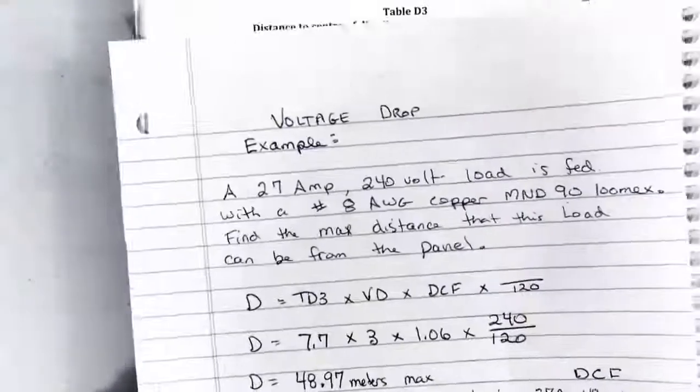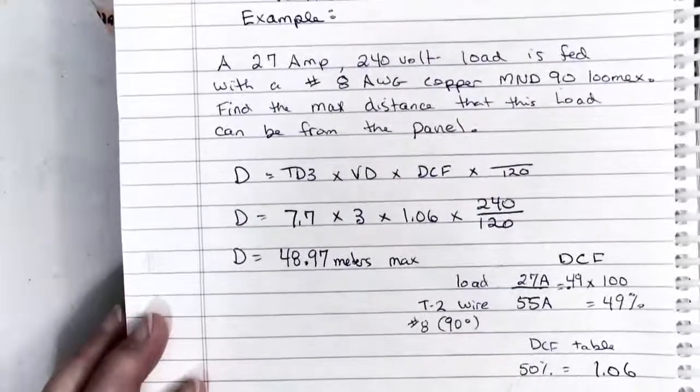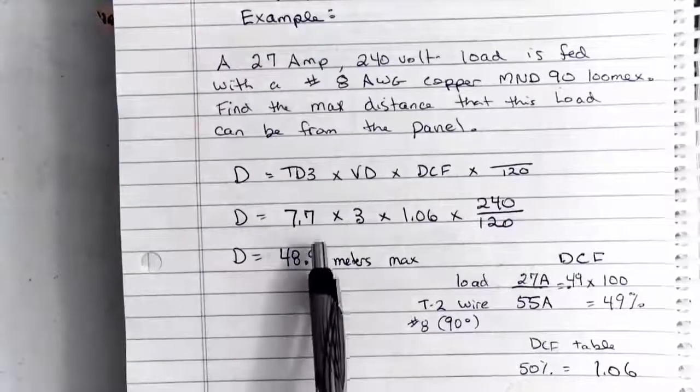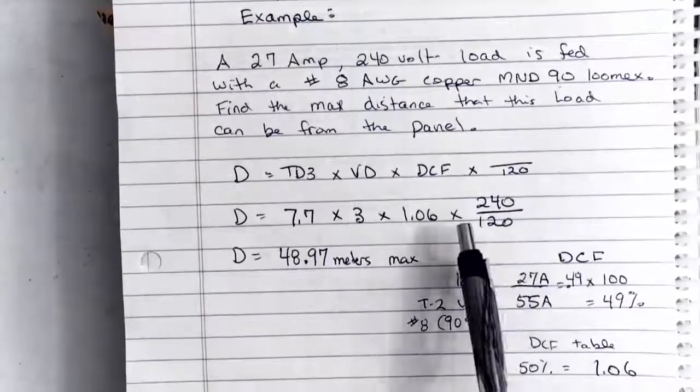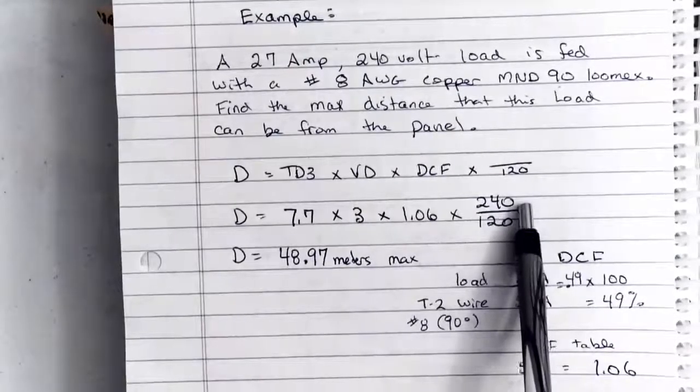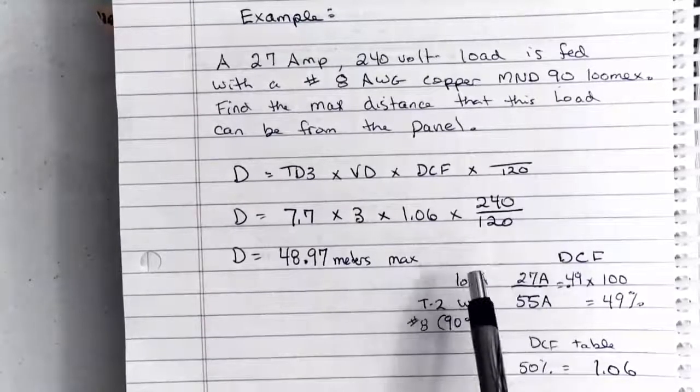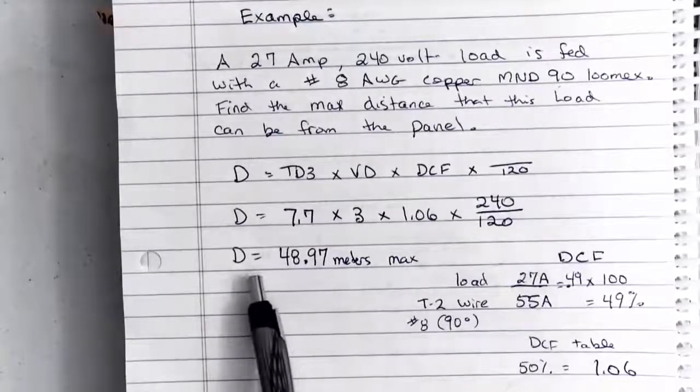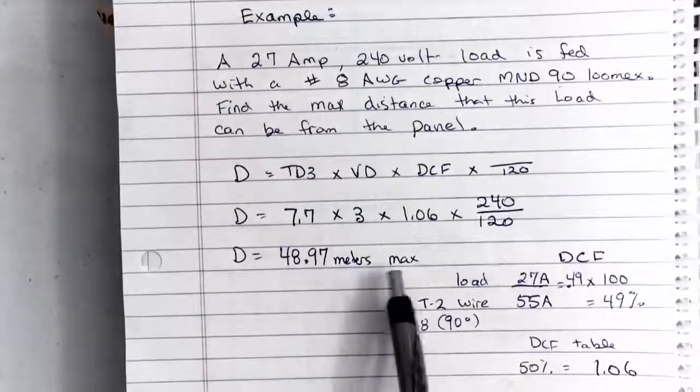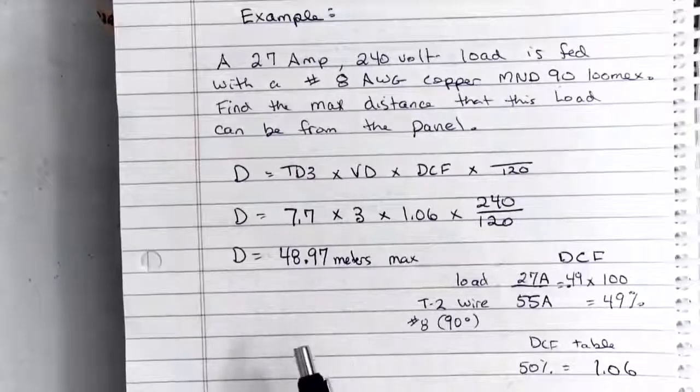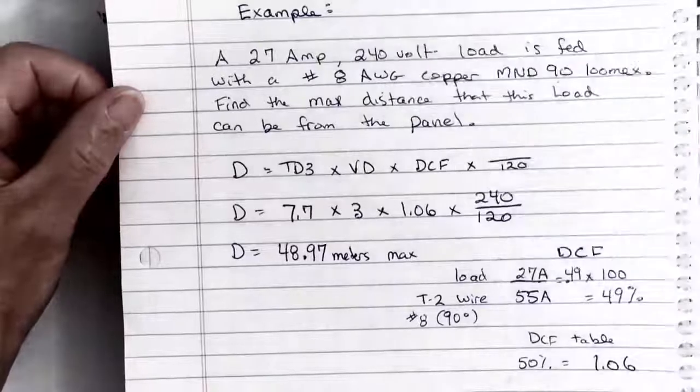So now I had the 1.06 which I found with my distance correction factor by going to the table. And the last piece was I was given 240 volts as my supply. I divide that by 120 to adjust this formula. And when I multiply all this out, I end up with 48.97 meters is the maximum distance that I could use a number 8 copper conductor to feed this 27 amp load.